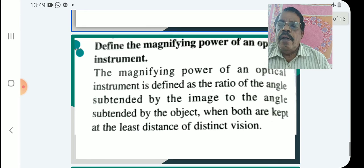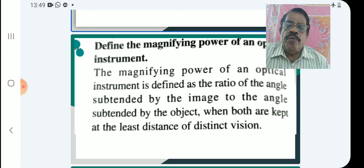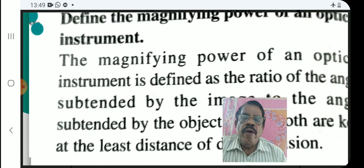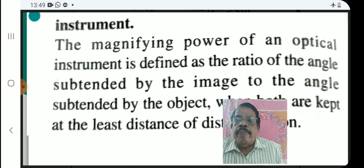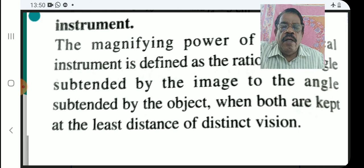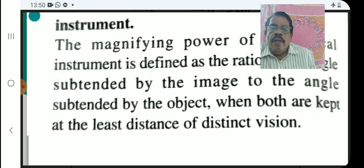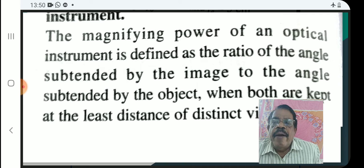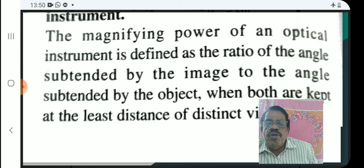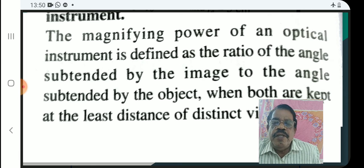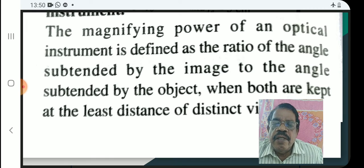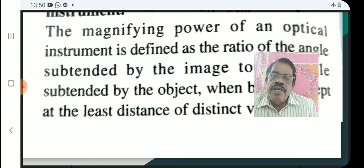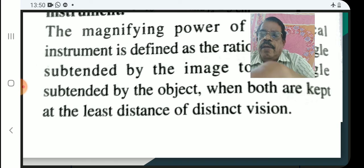Define the magnifying power of an optical instrument. The magnifying power of an optical instrument is defined as the ratio of the angle subtended by the image to the angle subtended by the object, when both are kept at the least distance of distinct vision.